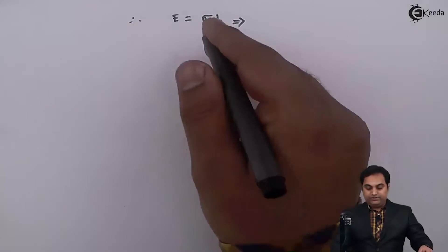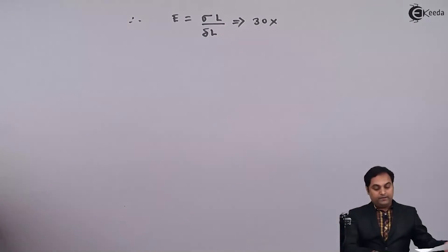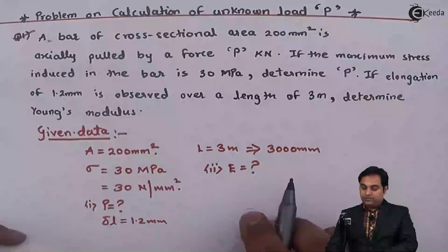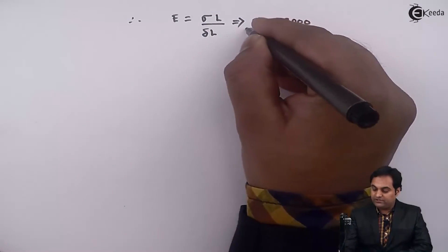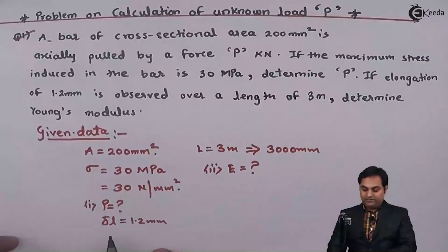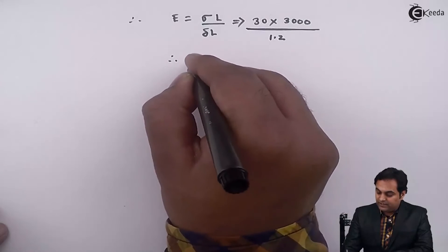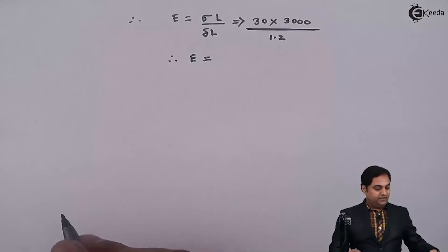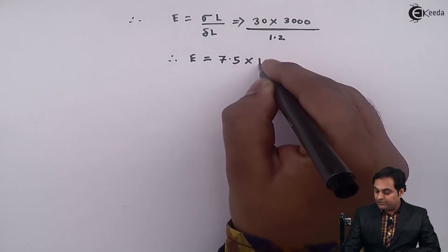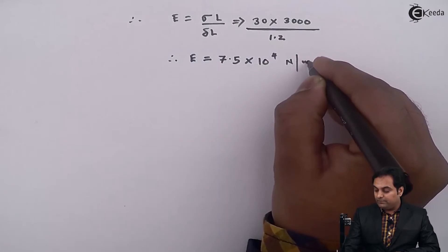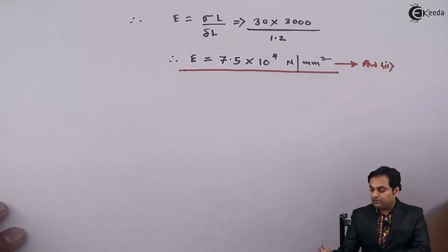We have to calculate capital E, so E = stress times L divided by deflection delta L. Putting in the values: stress = 30 N/mm², length = 3000 mm, and deflection = 1.2 mm. This gives the modulus of elasticity as 7.5 × 10⁴ Newton per mm², which is the second answer.